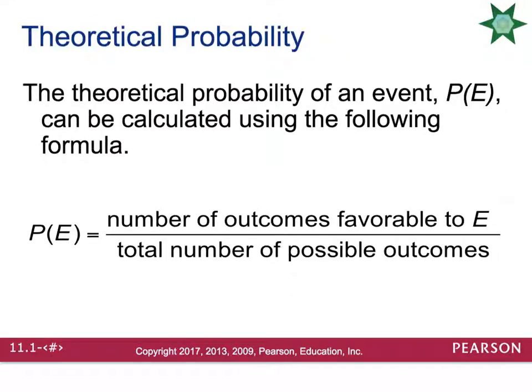When events have equally likely outcomes, you can calculate the probability using theoretical probability and you don't actually need to run an experiment. When you do theoretical probability, you take the number of outcomes favorable for your event E divided by the total number of possible outcomes.